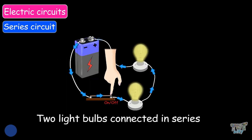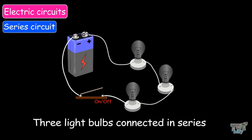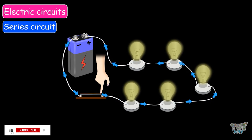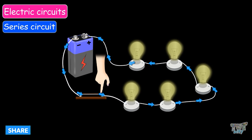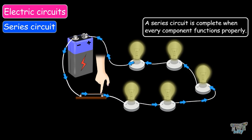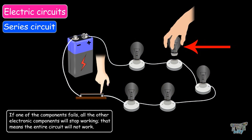Here we have two light bulbs connected in series, and here we have three light bulbs connected in series. If the light bulbs are connected in series, the brightness of each individual bulb reduces upon adding more bulbs. In a series circuit, the same current flows through all the electrical components regardless of what components are used. A series circuit is complete when every component functions properly. If one of the components fails, all the other electronic components will stop working — the entire circuit will not work.